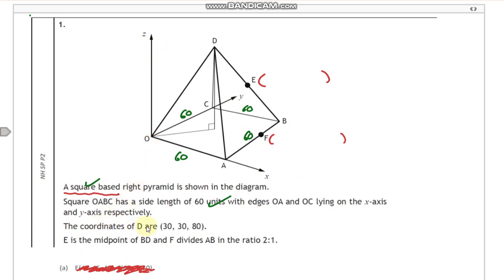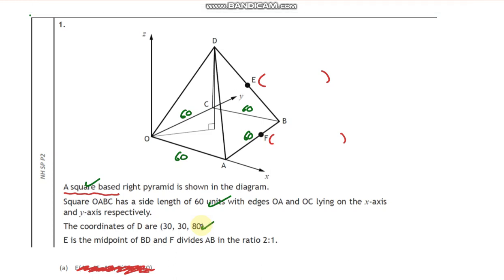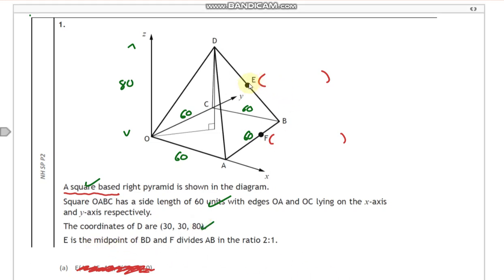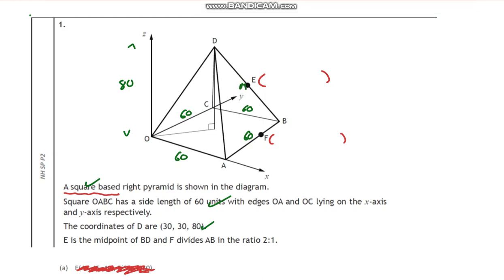We've got the x, y, z coordinates of D as 30, 30, 80. That makes sense because D is bang in the middle — 30 along, 30 in the y direction — and the height is 80, so the pyramid is 80 tall. E is the midpoint, and there's a ratio of two to one.